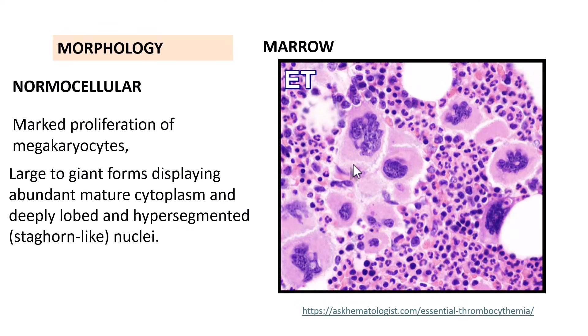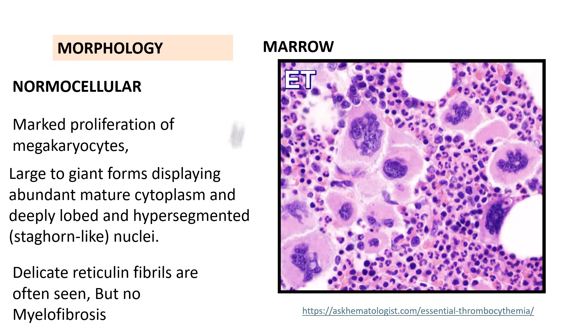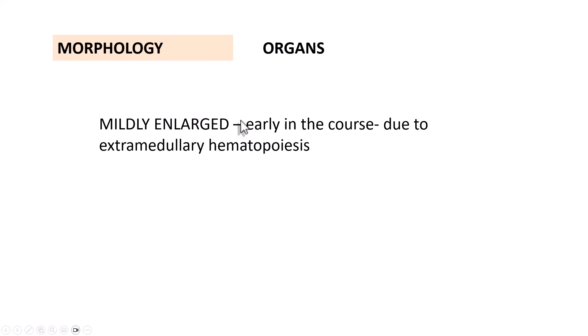Remember, none of these megakaryocytic changes are dysplastic — the moment you see dysplastic features, think of myelodysplastic neoplasms. This being a myeloproliferative neoplasm, you should never see dysplastic features. Delicate reticulin fibrils can be seen but are not as prominent as in polycythemia vera. Organs can be mildly enlarged; there can be mild splenomegaly due to extramedullary hematopoiesis.